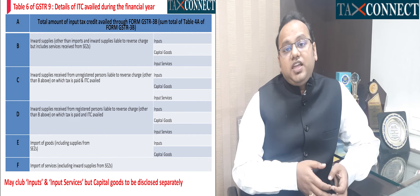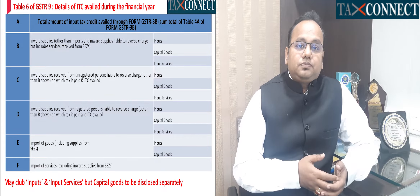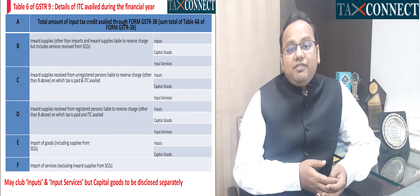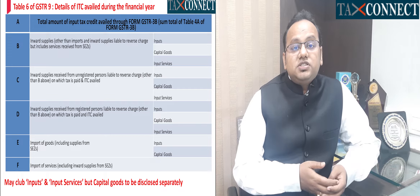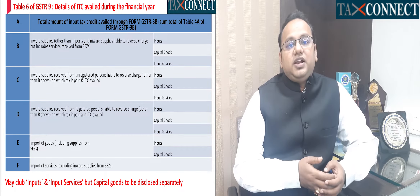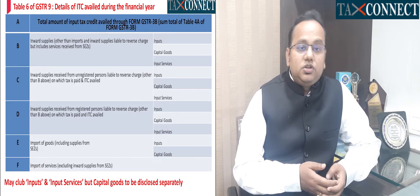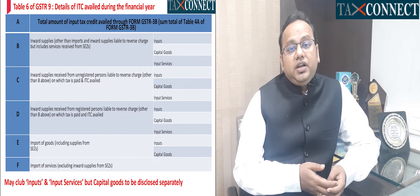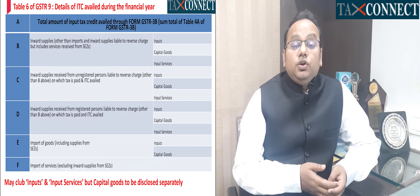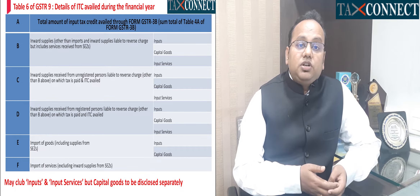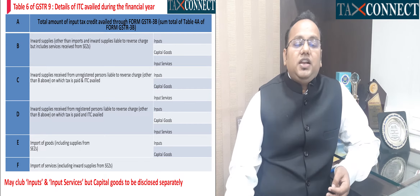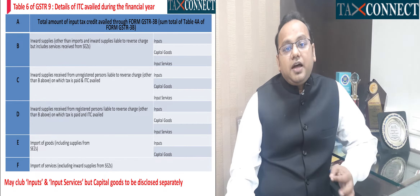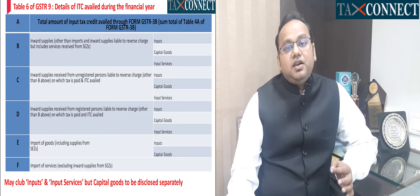Another change is in table number 6, whereby in 17-18 and 18-19 you could club inputs, input services and capital goods related ITC and show it under inputs. From 19-20, it is mandatory to disclose the input tax credit related to capital goods separately; only inputs and input services can be clubbed together in table number 6.